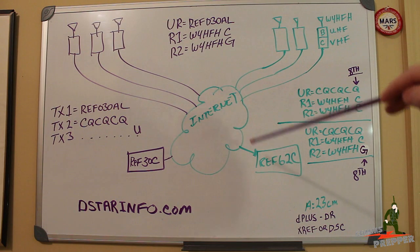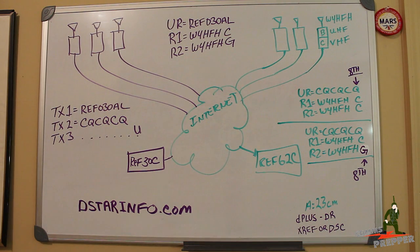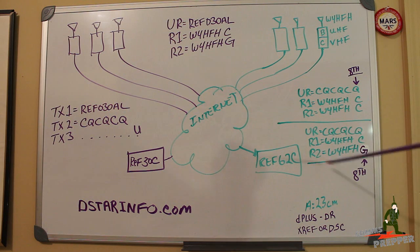Now this repeater is connected to the internet, and a reflector, but with this routing setup here, it will not go out to the reflector. If I want to get out to the internet, and have people on the reflector, and other systems that are connected to the same reflector hear me, I have to do this routing table here.